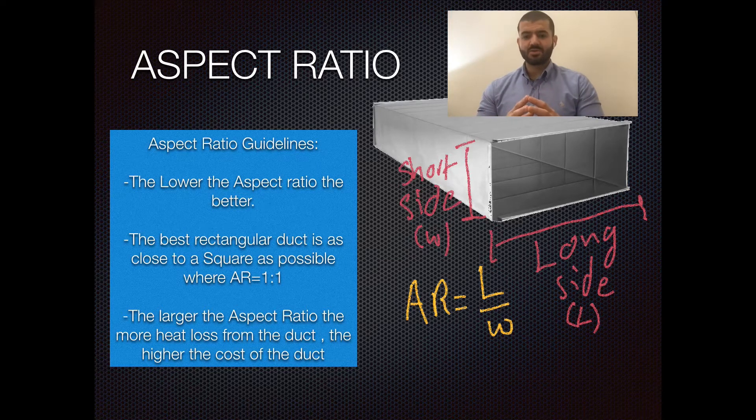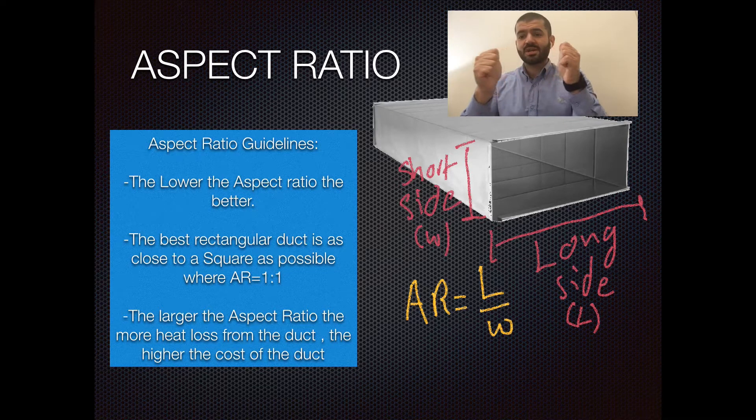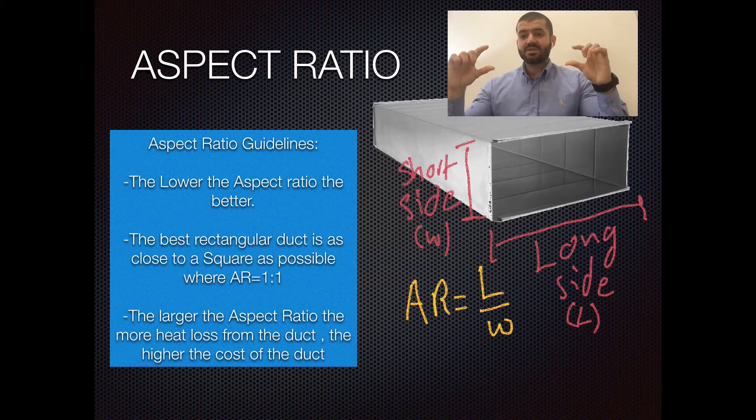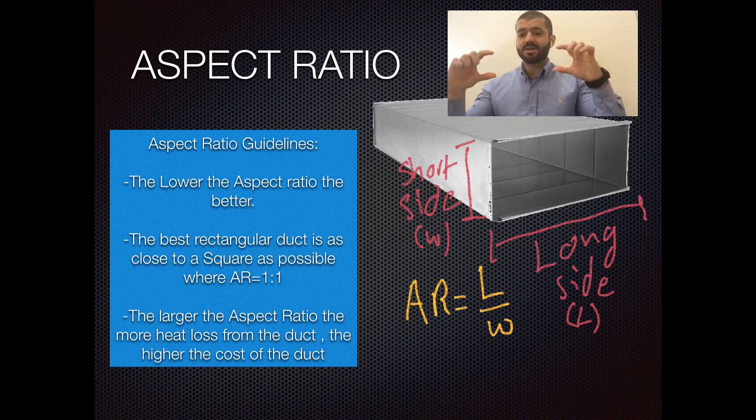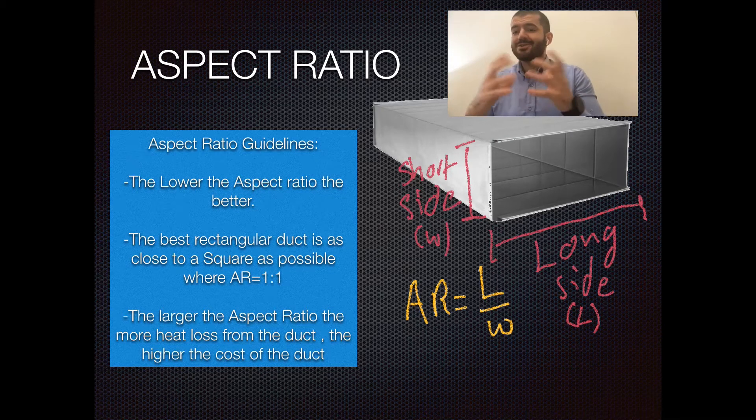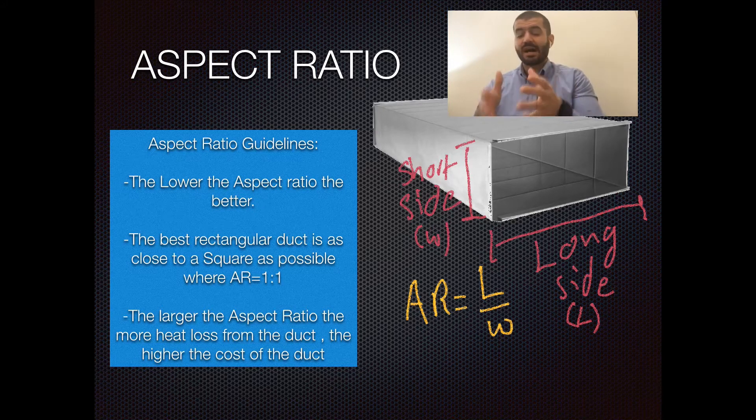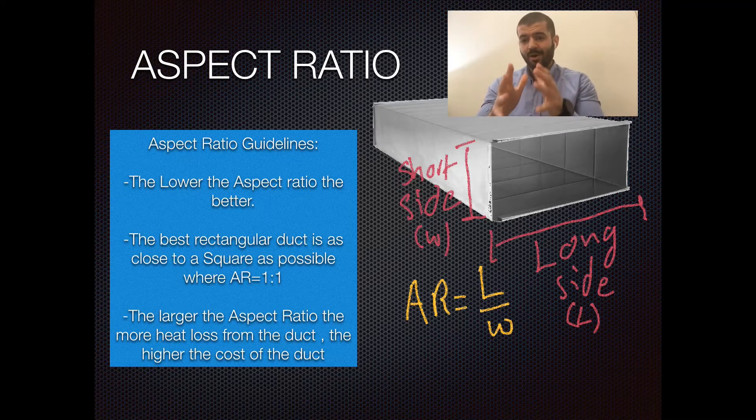Think about it this way. If you have, for example, a rectangular duct and you're stretching it out, what's going to happen to the duct? The width is going to shrink and the length is going to increase, right? However, if we reverse the process, what are you going to have? Both sides almost the same. So the best way to go about this is to have your aspect ratio as close to 1 as possible.